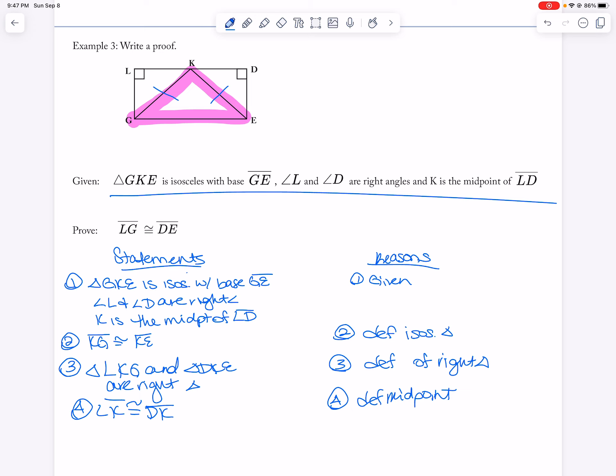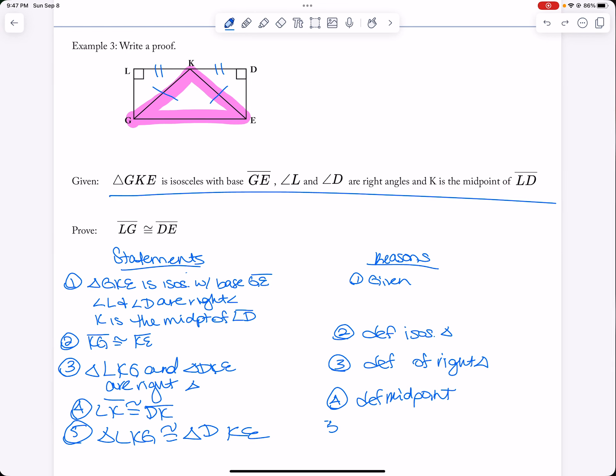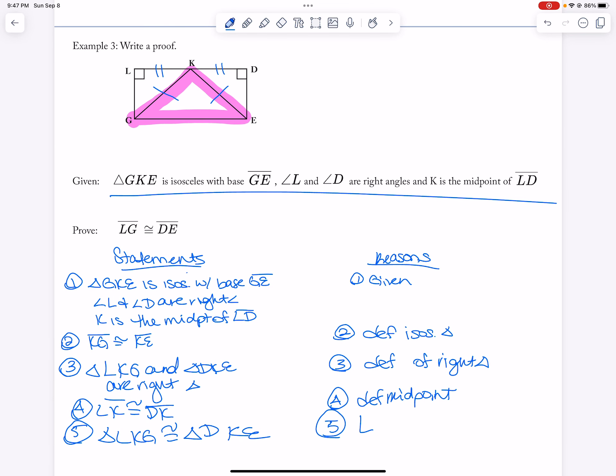So let's see. I have LK, so now I have a hypotenuse leg. So triangle LKG is congruent to triangle DKE, and this is, oh not definition, HL theorem.